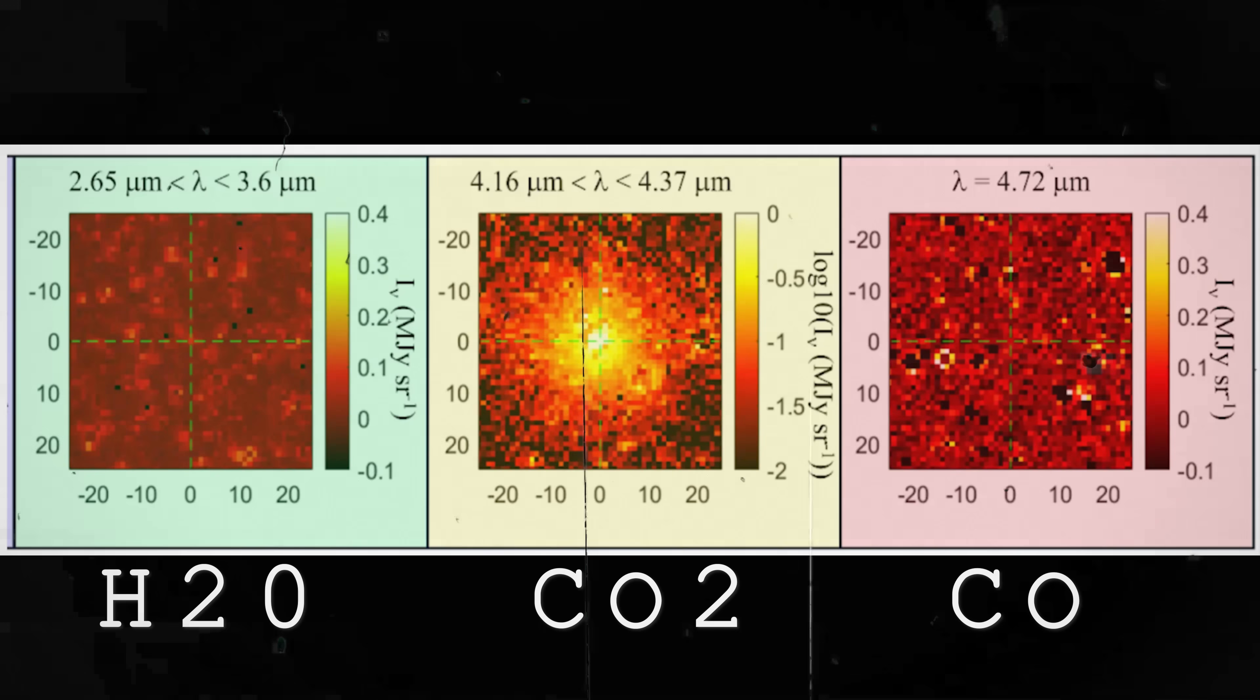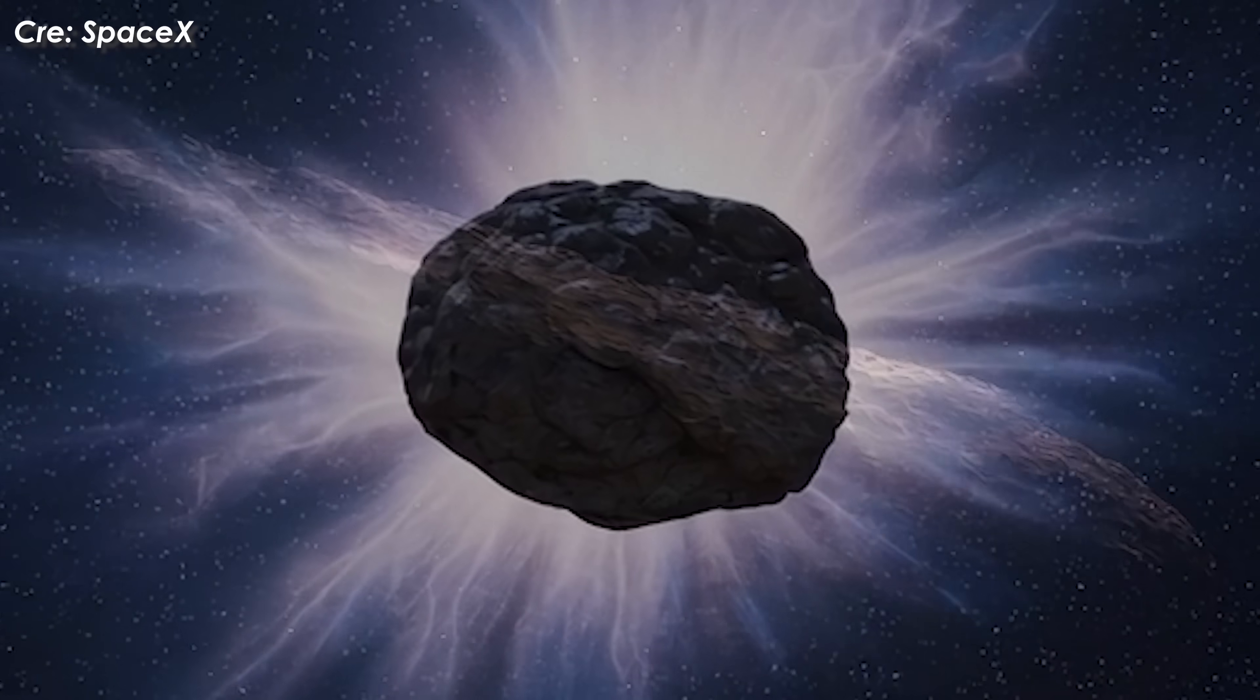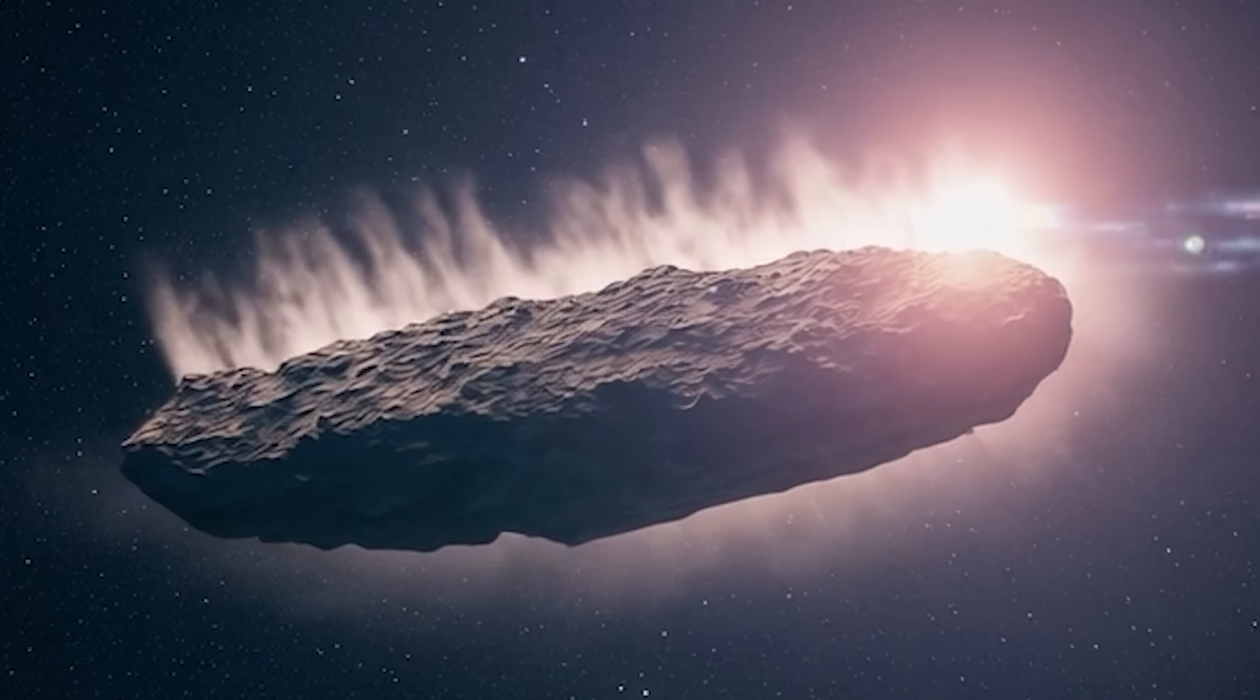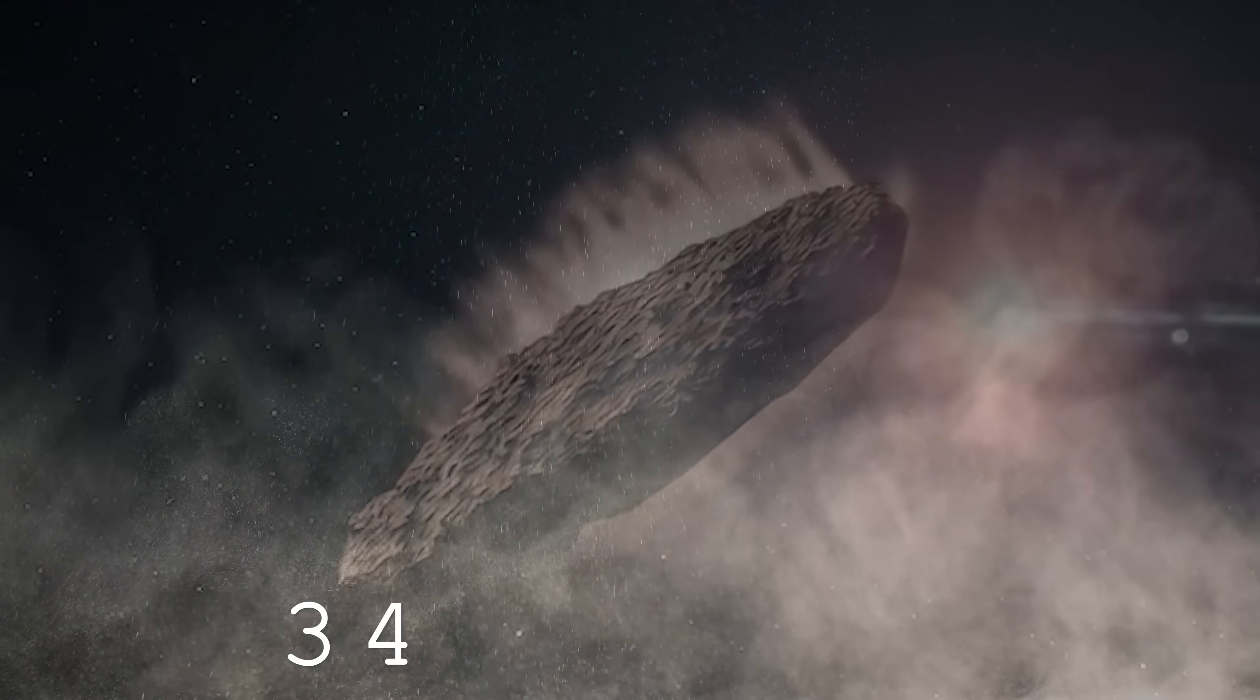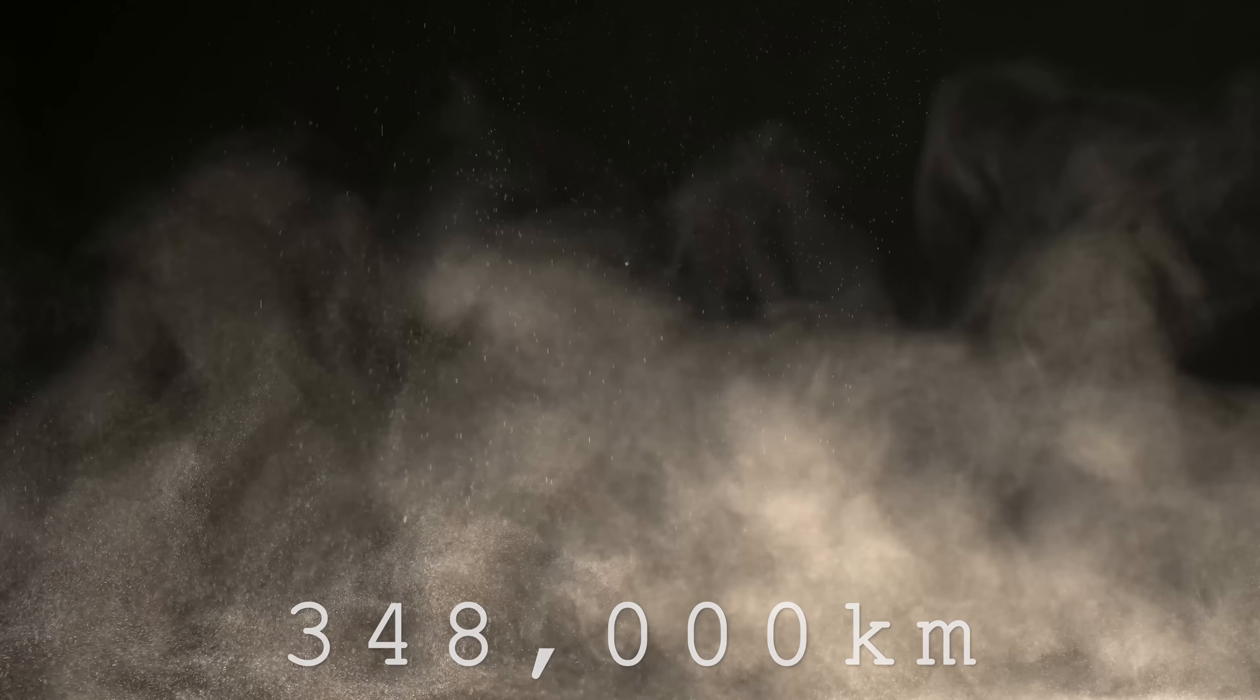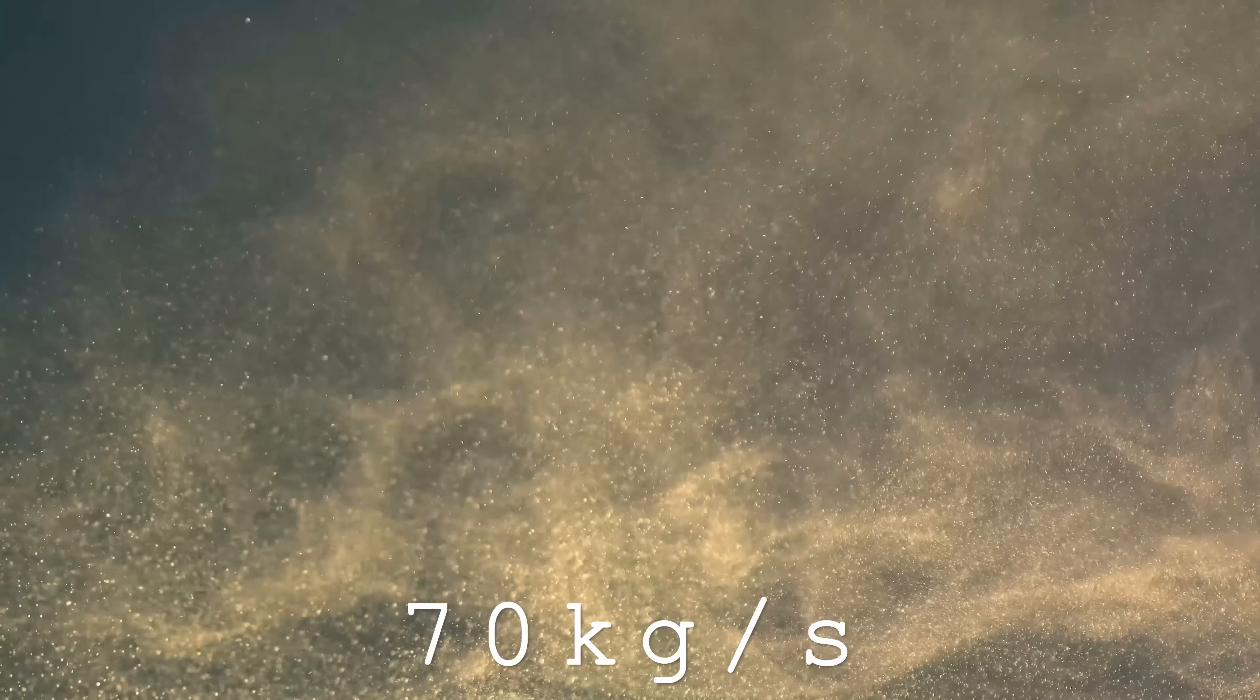But here's the surprise. No signs of water, and no CO either. Instead, SPHERE-X detected a massive glowing cloud of carbon dioxide surrounding 3I Atlas, stretching at least 348,000 kilometers. Calculations show the object is losing mass at a rate of about 70 kilograms of CO2 per second, while water loss is almost non-existent, far below earlier claims of strong water activity.